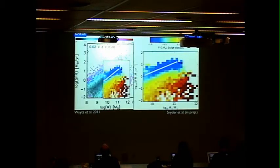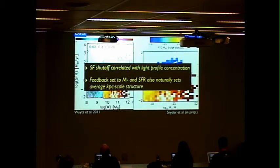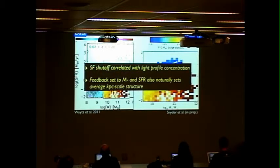Something that is descriptive about the simulation results — I want to step back and say what I think this means. First, star formation shutoff is correlated with light profile concentration. We've heard this all week — it's the bulge quenching idea. But I think this is perhaps not that surprising, because feedback models tuned to global stellar mass and star formation rate also naturally set the average kiloparsec-scale galaxy morphology. We should not be very impressed — it's almost by design.